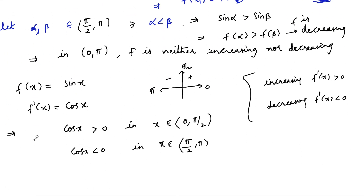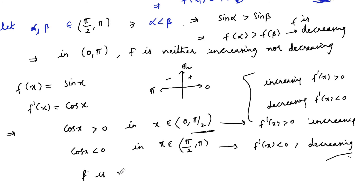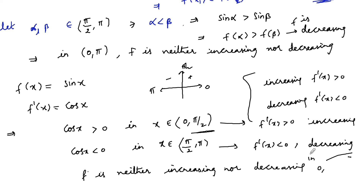Since f'(x) = cos x is positive on (0, π/2), f is increasing on (0, π/2). Since f'(x) is negative on (π/2, π), f is decreasing on (π/2, π). Hence we can conclude that f is neither increasing nor decreasing on (0, π). This is how the answer can be given.